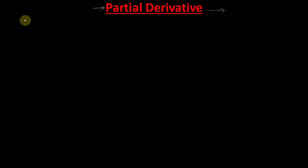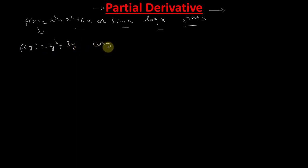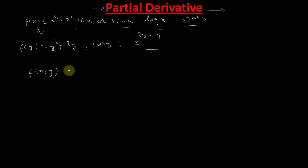So far we have done derivatives of functions with only one variable, like f(x) = x³ + x² + 6x, or sin x, log x, e^(4x+3). All these functions contain only one variable x. Similarly, it can be f(y) = y³ + 3y, cos y — these functions contain only one variable, like e^(3y+4). But sometimes we have a function of more than one variable, denoted by f(x, y).